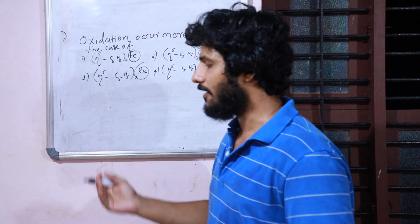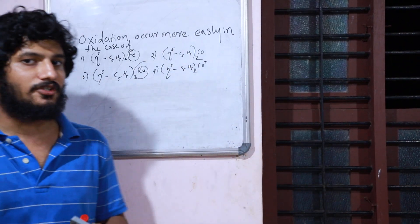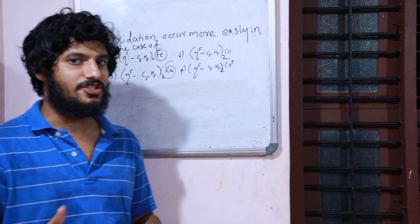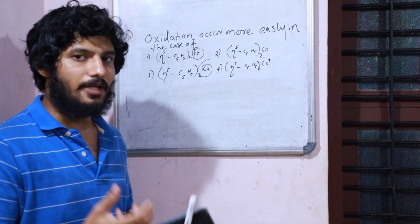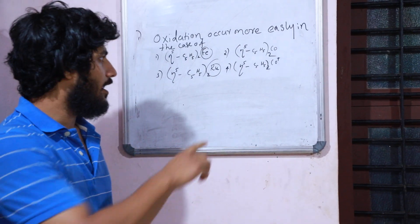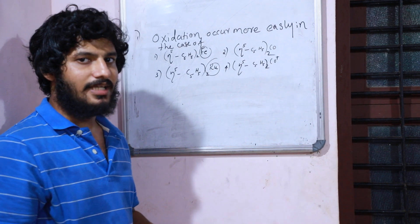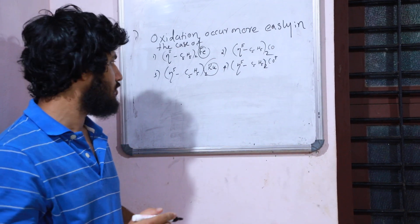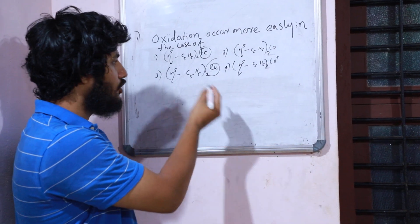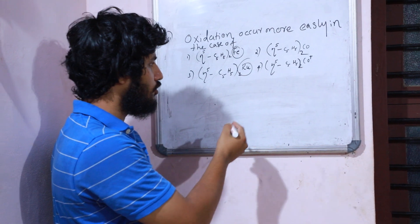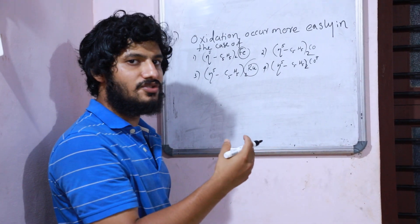The first option is ferrocene, which is a sandwich-type compound. The second option is cobaltocene, also a sandwich-type compound. The third option is ruthenocene, and the fourth option is cobaltocene.